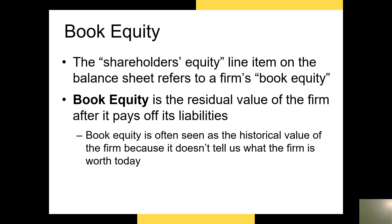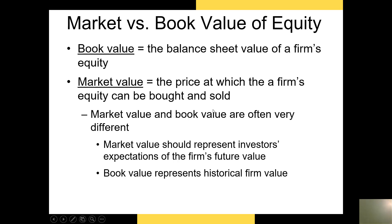The final line item on the balance sheet is book or shareholders' equity. We often refer to book equity as the historical value of a firm's equity because it tells us the value of historical assets minus historical liabilities. This number is extremely different from the market value or market cap of a firm's equity, which is based on the price per share paid by investors right now. The market value of equity represents exactly what investors would be willing to pay immediately for the firm's equity, and should be very close to the value of the firm's discounted cash flows.